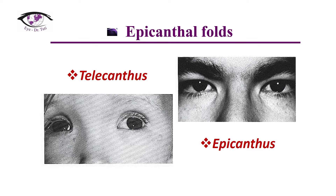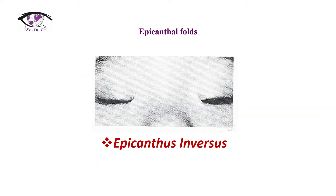Epicanthal folds are the next important parameter to consider for strabismus examination. Telecantus refers to an increased distance between the medial canthi of the eyes while the interpupillary distance is normal. Epicantus is a condition in which a fold of skin stretching from the upper to the lower eyelid partially covers the inner cantus. On photo A, this patient demonstrates telecantus with inter-orbital dimensions clearly more than one half the interpupillary distance and also has exotropia. On photo B, a patient with epicantus shows a prominent epicanthal fold. Epicantus inversus is a skin fold originating below and sweeping upward, visible when the patient looks down or closes their eyes.